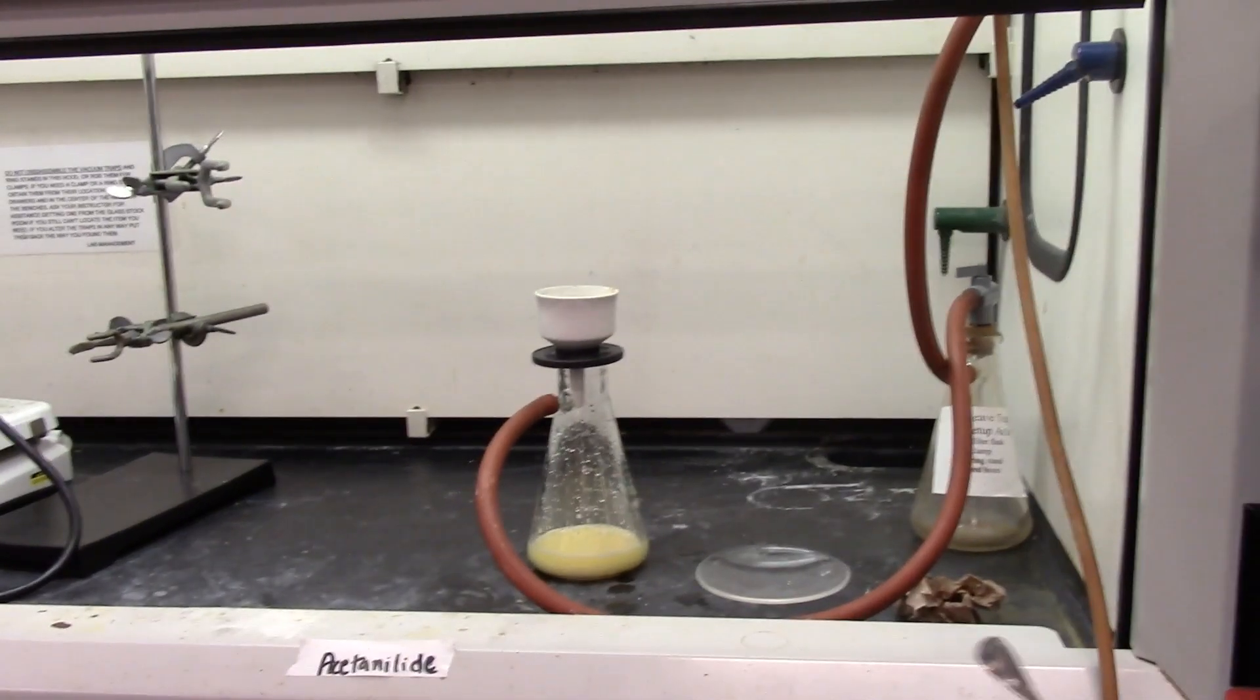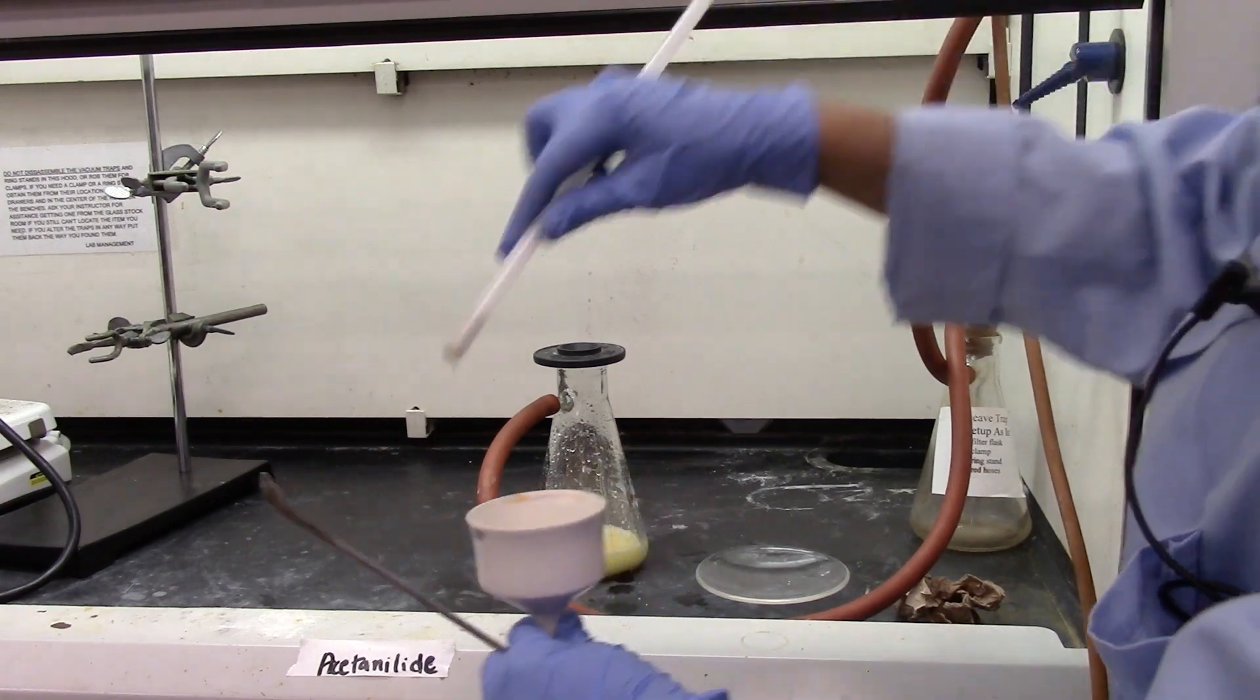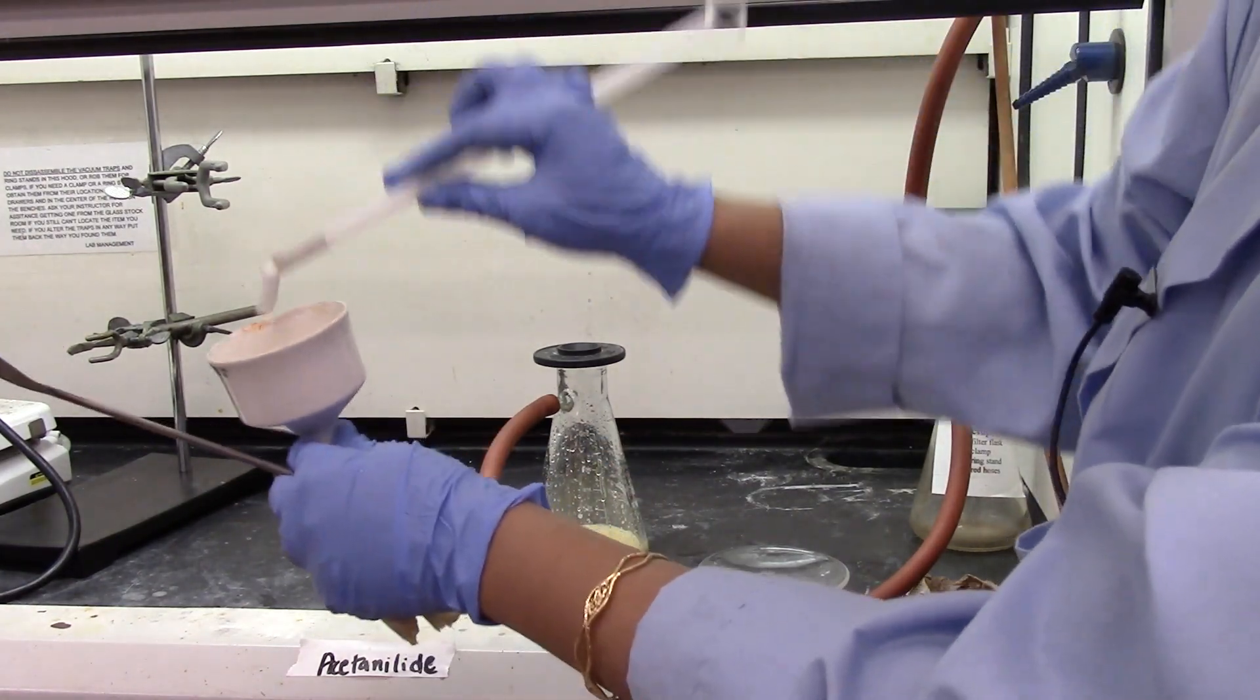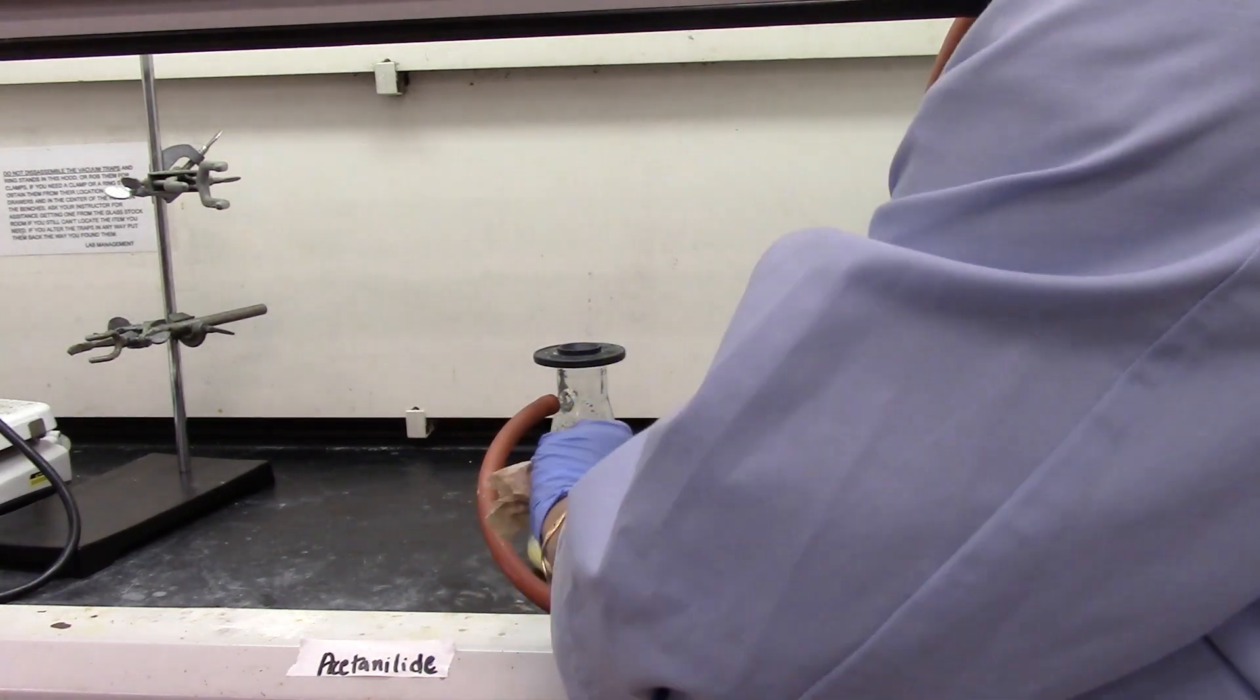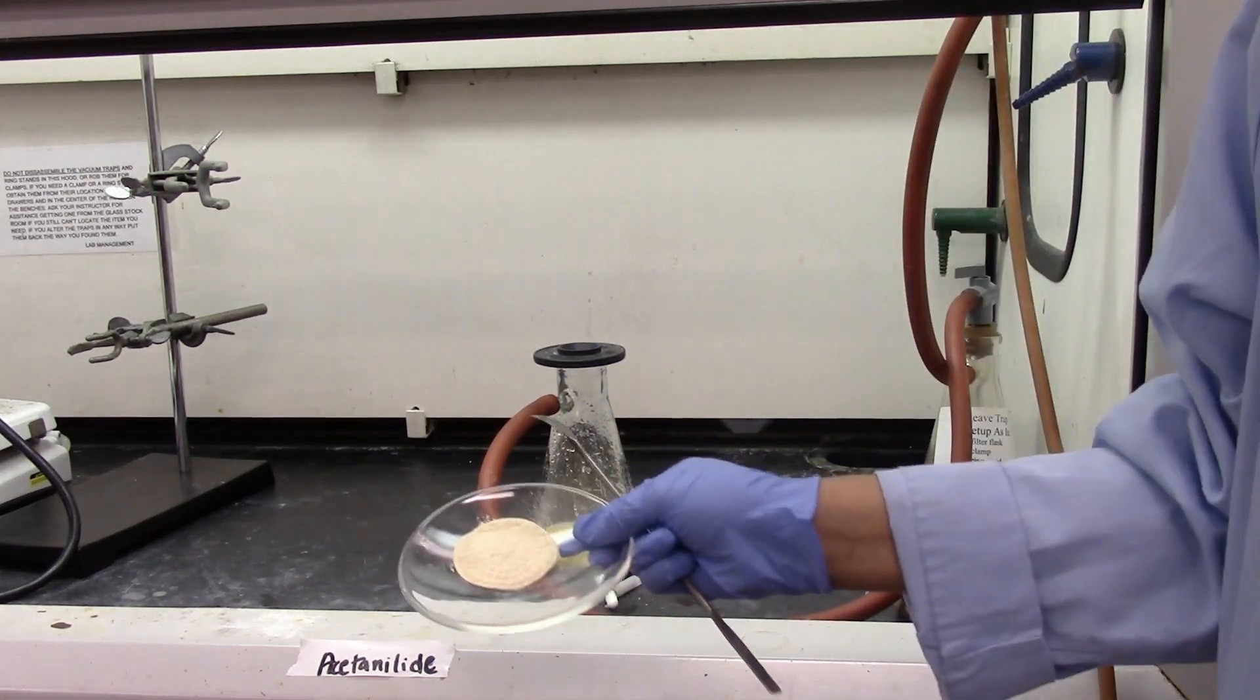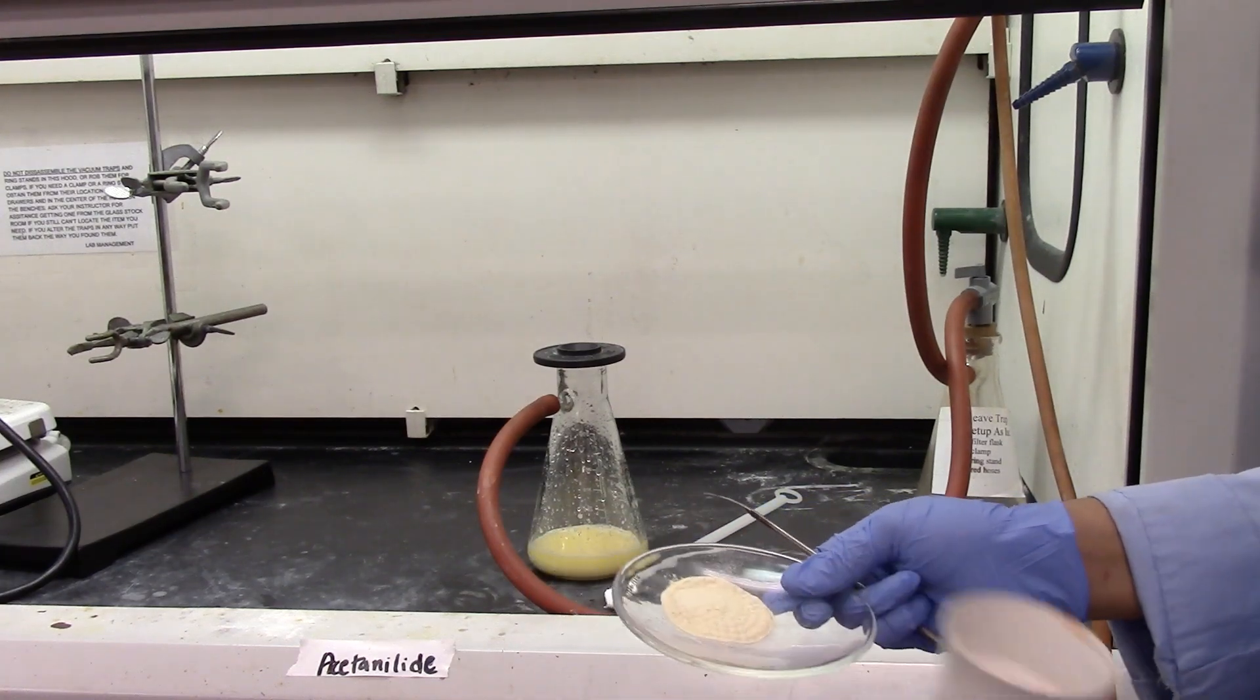The product looks pale yellow. I'm going to add about 5 ml of DI water on the top. Turn on the vacuum. That's the acetanilide product sitting in the vacuum. I'm going to turn off the vacuum and scoop the product onto the watch glass. I do have my stir bar. I'm going to take it out with a magnetic retriever.